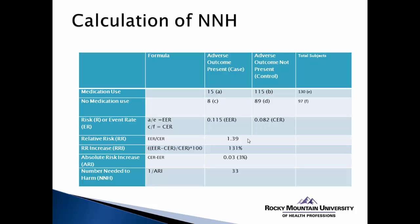Our next calculation gives a more definitive quantitative estimate of the risk of the adverse event: the relative risk. We take our EER value and divide it by the CER value, giving a relative risk of 1.39. We interpret this as the experimental group having a 1.39 times greater likelihood of having the adverse event versus the control group. Since 1.0 represents equal probability in both groups, the experimental group is at slightly elevated risk. If the relative risk were 2, 3, or 4, the experimental group would be that many times more likely to have the adverse outcome.